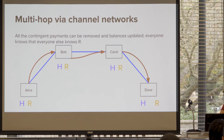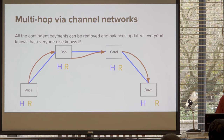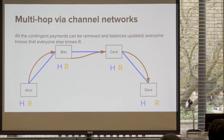All the contingent payments can be removed, because everyone knows that everyone else knows R. So all these conditional payments are going to happen — we can just update our channel state to not require the R value at all and instead just say you've got an extra coin. There's essentially no difference from everyone's perspective because they're all aware.